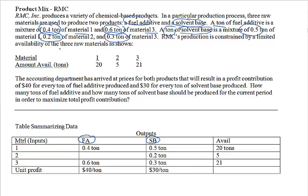Now there are limited amounts of materials 1, 2, and 3 as given by these values: 20 tons, 5 tons, and 21 tons. We put them in the available amounts column. There's also the $40 unit profit for the fuel additive and $30 unit profit for the solvent base. We put those in the unit profit row: $40 per ton and $30 per ton.